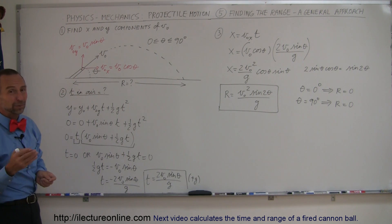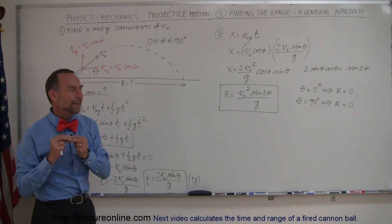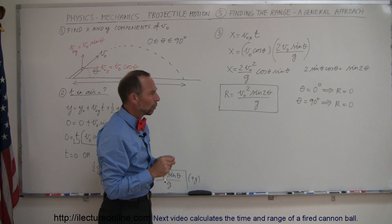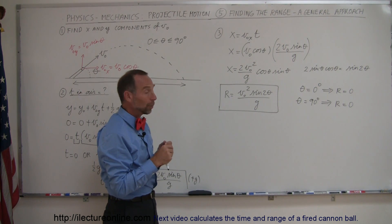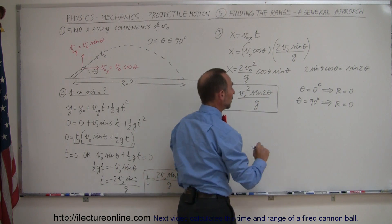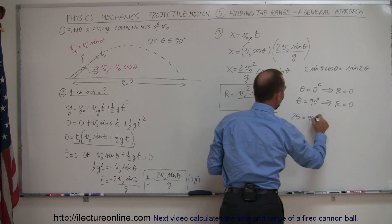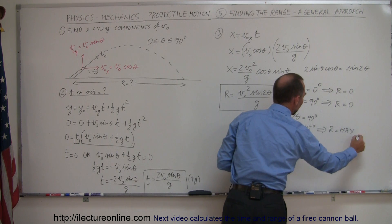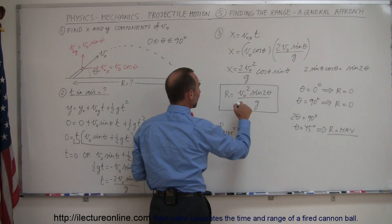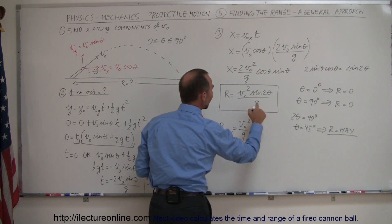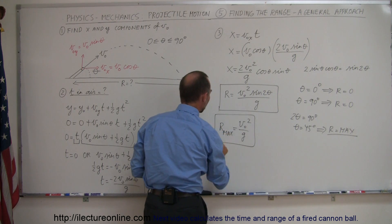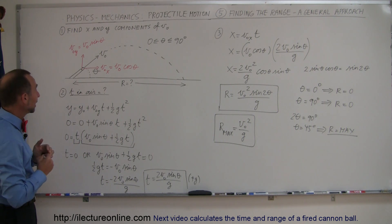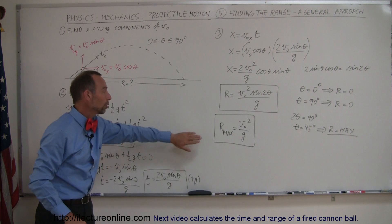The range can only be non-zero for angles between 0 and 90 degrees. The maximum range occurs when the sine of 2 theta is as large as possible — i.e., when the sine equals 1, which happens when 2 theta equals 90 degrees, meaning theta equals 45 degrees. So R-max equals v-sub-naught squared over g times the sine of 90 degrees, which is 1. Therefore R-max equals v-sub-naught squared over g. That is the equation for the maximum possible range of a projectile.